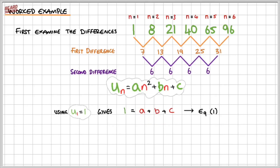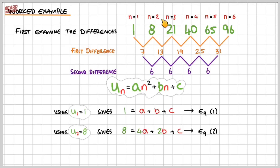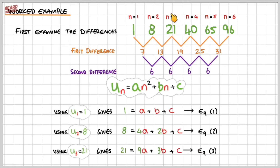For the second term, we know it's 8, so we substitute n equals 2: 2 squared is 4, so we get 4a plus 2b plus c equals 8. That's equation 2. For the third term, substituting n equals 3: 3 squared is 9, so 9a plus 3b plus c equals 21. That's equation 3. So we have these three simultaneous equations, and to solve them we're going to subtract equation 1 from equation 2 to give equation 4, and subtract equation 1 from equation 3 to give equation 5.